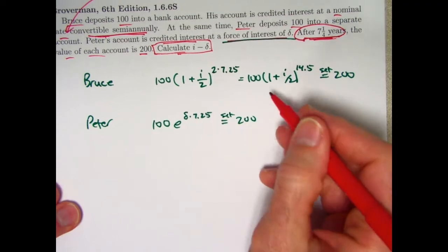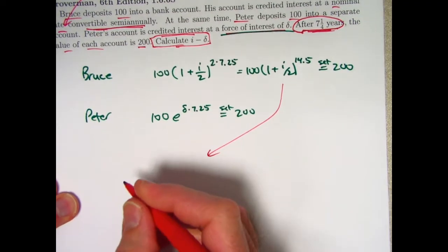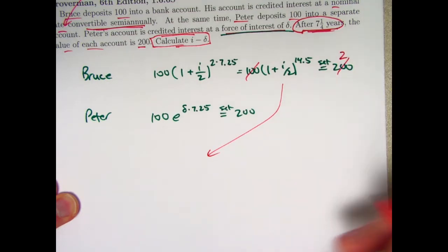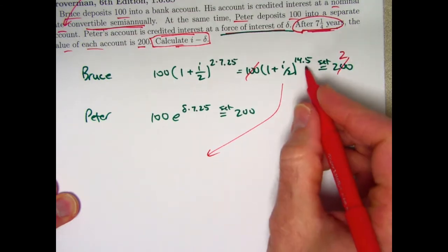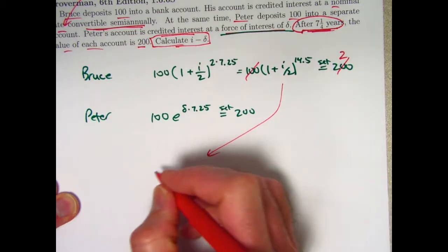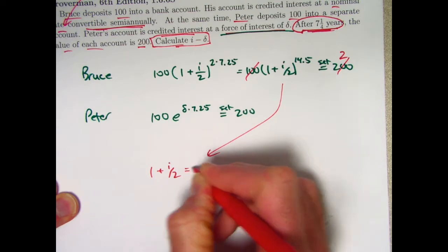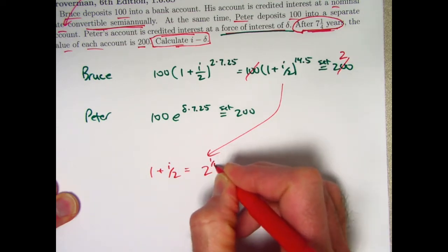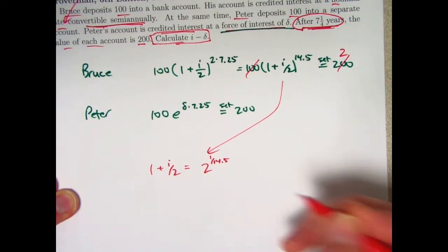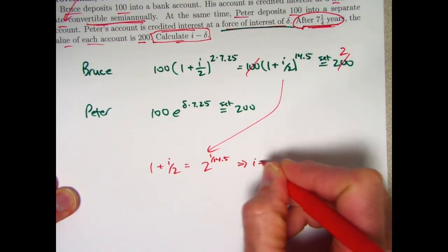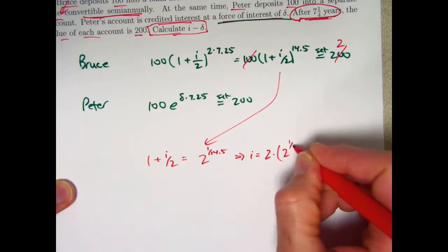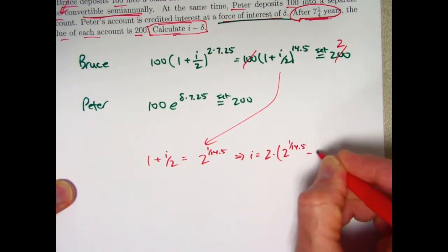So it's not really that hard. Let's take a look at Bruce's equation here. You can cancel the 100 with the 200 to leave a 2. Then you can take both sides to the 1 over 14.5 power. So you'll get 2 to the 1 over 14.5 power. You'll then subtract 1 and then multiply by 2. i is going to be 2 times, in parentheses, 2 to the 1 over 14.5 power minus 1.